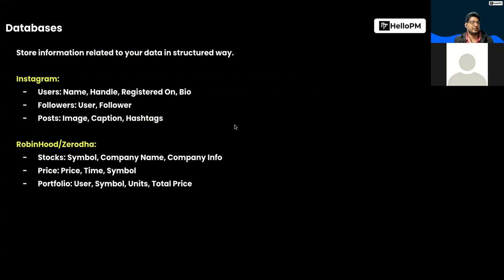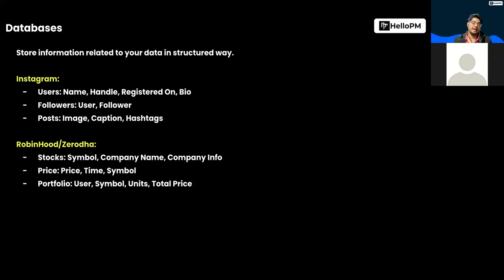Now we are talking about databases. In the Instagram example, Instagram has to find who the people are that I follow, find what posts they've created, compile them, and show them to me. But in order to do all of this, it has to store this data somewhere so it can use it. Data is most of the time the core asset of any product or technology you create. Databases are used to store information related to your product in a structured way.